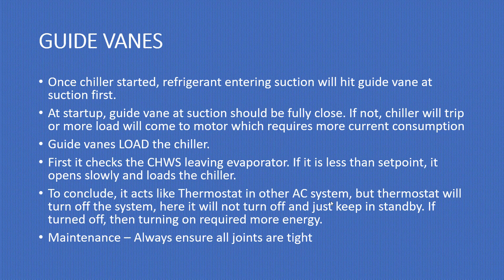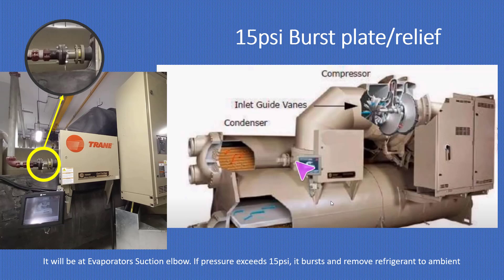Maintenance: always ensure all joints are tight. Another important component is the 15 PSI burst plate or relief disc. You can see it here — it will be at the evaporator section elbow. If pressure exceeds 15 PSI, it bursts and removes the refrigerant to the atmosphere. This is the inlet gate vent assembly — the whole component is the compressor, followed by the condenser section.